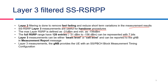Layer 3 measurements can be either beam level or cell level, and this can be configured by the gNB. These measurements are sent to the gNB as part of the measurement report. The gNB provides the UE with an SS/PBCH block measurement timing configuration, also known as SMTC.